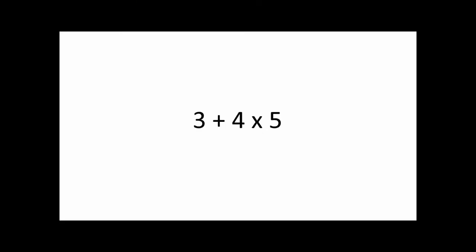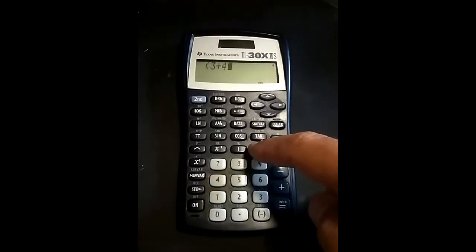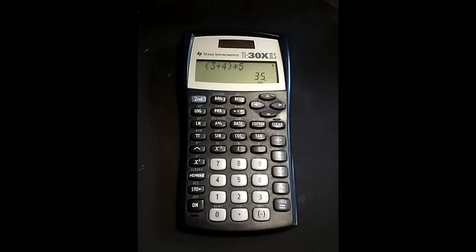What if we really wanted to multiply 5 times the sum of 3 and 4? This is where the parentheses come in handy. By entering the sum inside the parentheses, we force that part to be done first, which is 7. Then we multiply by 5, which gets us 35. Try it on the calculator. Parentheses, 3 plus 4, close parentheses, times 5, equals 35.